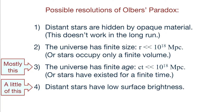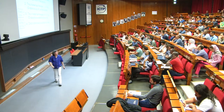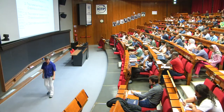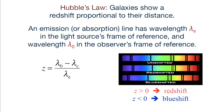So Olbers' paradox is putting limits on our universe: it can't be infinitely large, infinitely old, and obey Euclidean geometry all at the same time. Something's got to give. The thing that gave became apparent in the 1920s with the discovery of Hubble's Law — the fact that distant galaxies have redshifts in their spectrum, and that redshift is proportional to their distance from us.